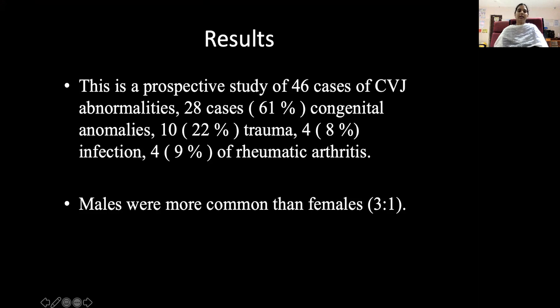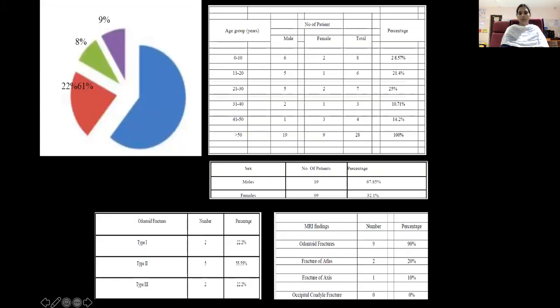In this prospective study of 46 cases of cranial-vertebral junction abnormalities: 28 cases, that is 61%, were congenital anomalies; 10 patients, that is 22%, were trauma; 8% were infection; and 9% were rheumatoid arthritis. Males were more common than females. In MRI findings, odontoid fracture was more common compared with fracture of the atlas and axis. Among odontoid fractures, type 3 fracture was most common.